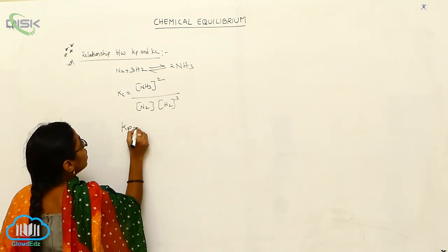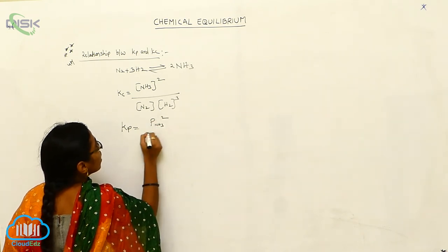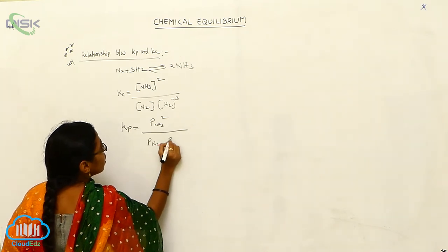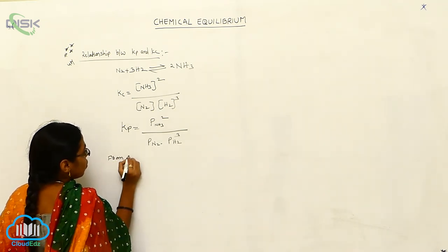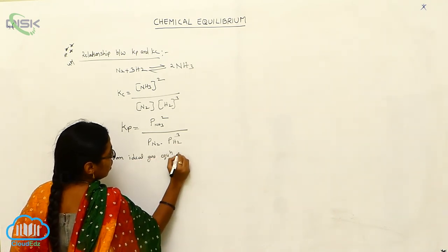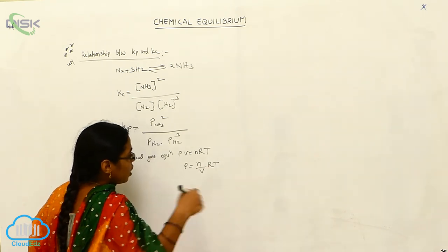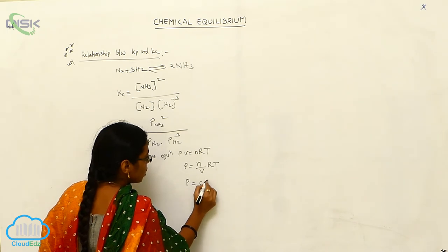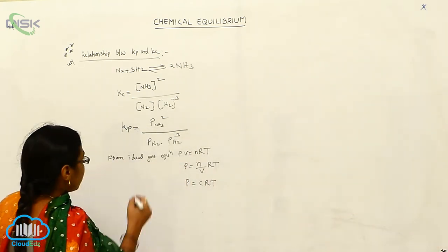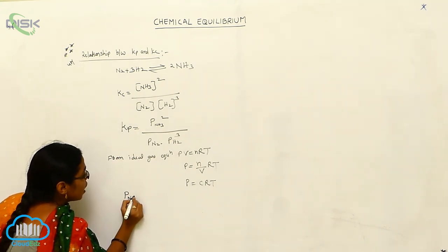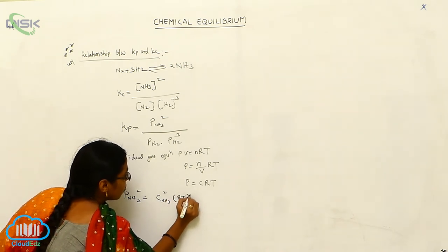For Kp, we replace concentrations with partial pressures: Kp = (P_NH₃)² divided by P_N₂ × (P_H₂)³. From the ideal gas equation PV = nRT, we can write P = (n/V)RT, and since n/V is concentration C, we get P = CRT.